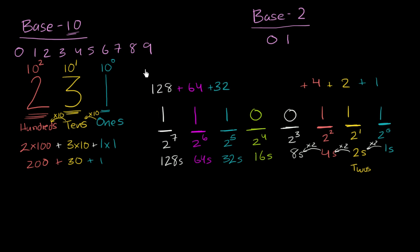Now we've started to see that we can have alternate number systems. We can have a base two number system, known as the binary number system, where instead of 10 digits you only have two digits. And each place, instead of being a power of 10, is going to be a power of two.